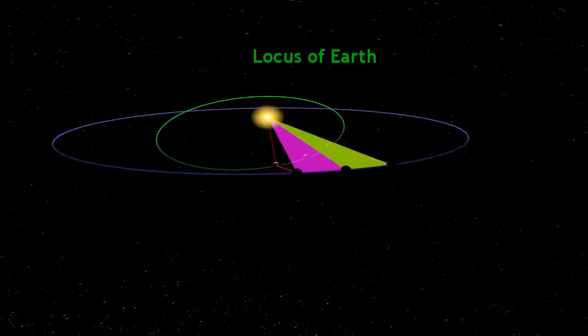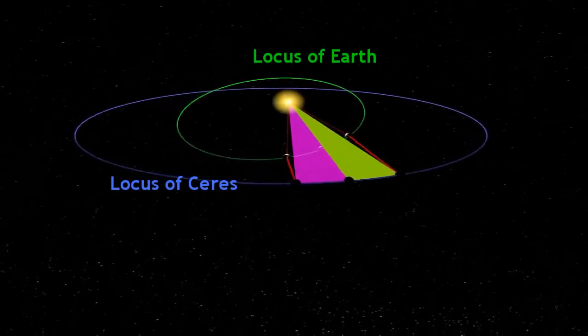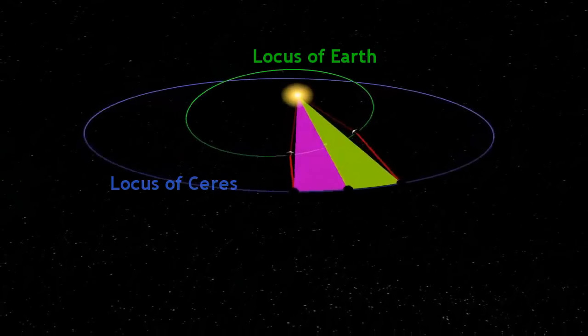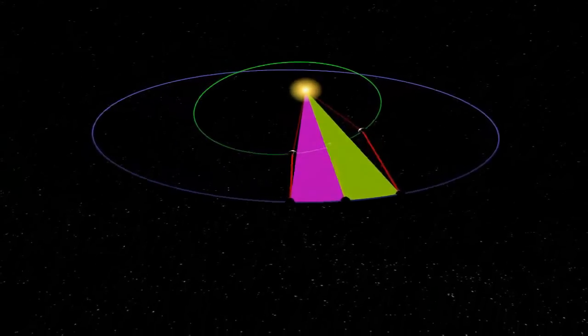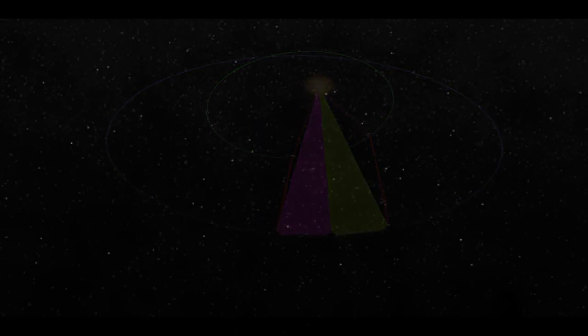Here, the green ellipse is the locus of the Earth as it orbits, and the blue is the locus of Ceres. But what relationship does this have to the contorted image we saw mapped on our celestial sphere?